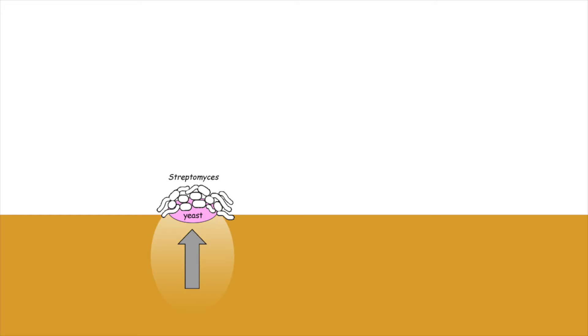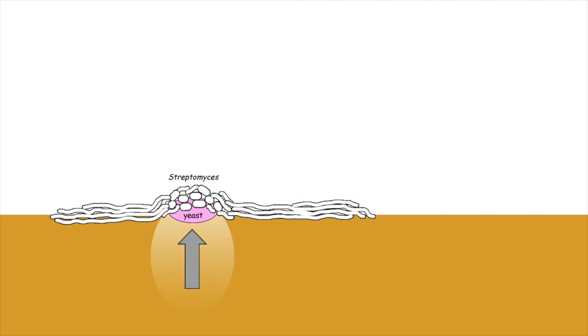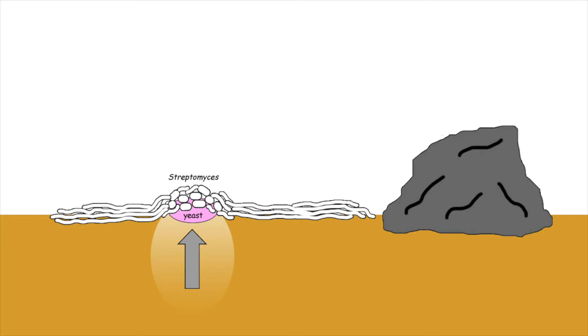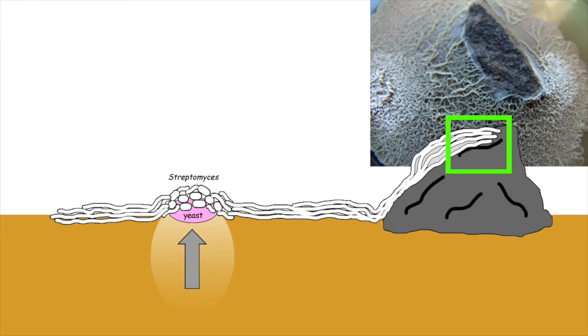We propose that yeast consumes glucose more rapidly than Streptomyces, and once this is depleted, Streptomyces initiate exploration. Astonishingly, explorer cells are able to traverse all sorts of surfaces, including up and over rocks.